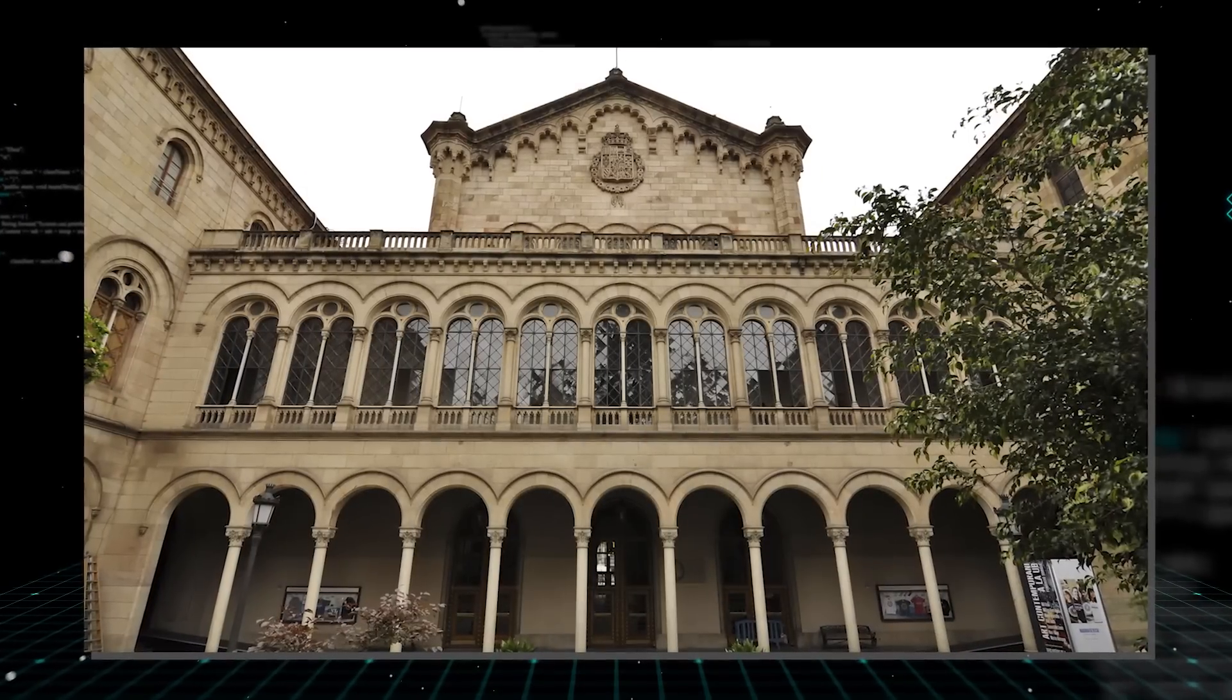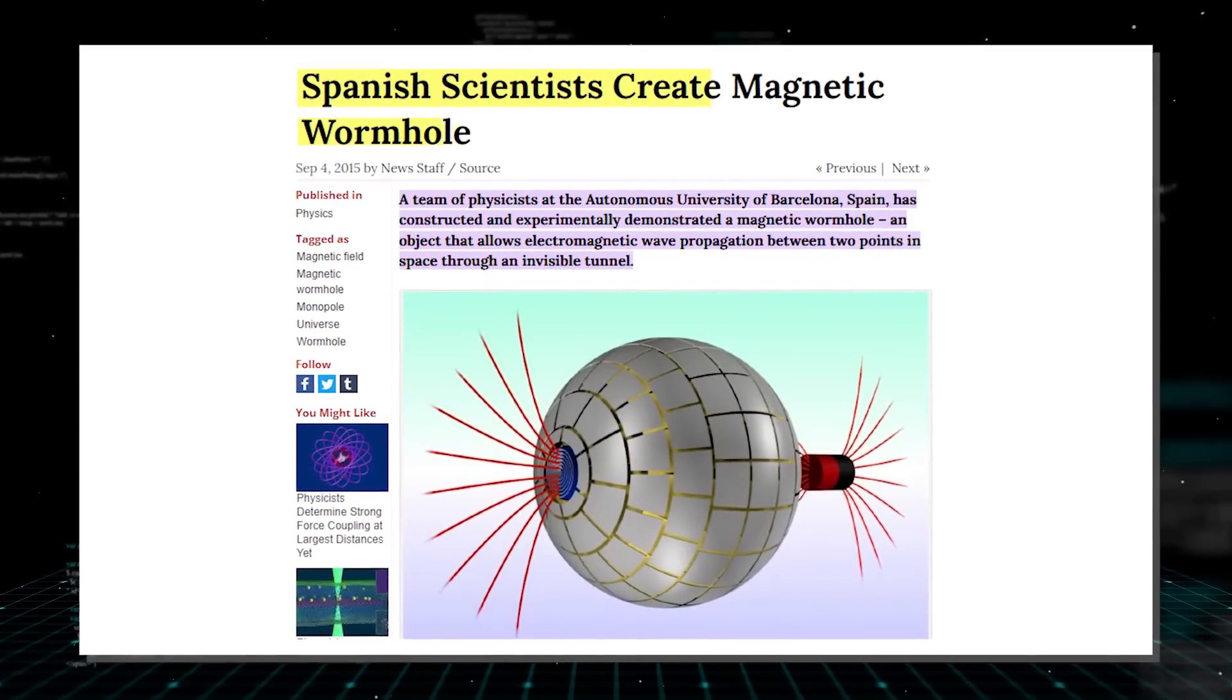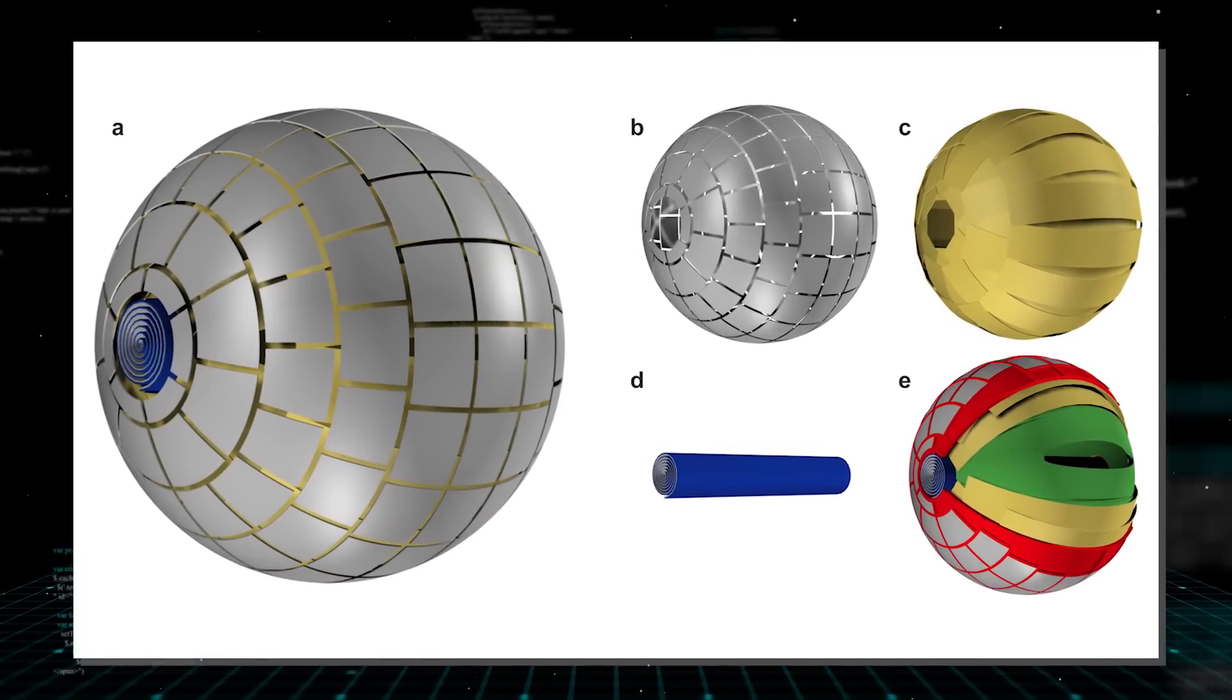These researchers based at the Autonomous University of Barcelona in Spain have designed a spherical device capable of transferring a magnetic field from one point in space to another.